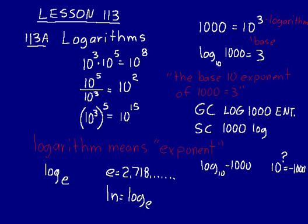Find the LN button on your calculator and do the natural log of 10. You should get about 2.3, rounded to one decimal place. That means 2.3 is the exponent for a base of E — in other words, E to about the 2.3 power equals 10. You can prove it: 2.718 to the 2.3 power gives about 9.97, which is almost 10. Of course, we rounded, so we won't get exactly 10.